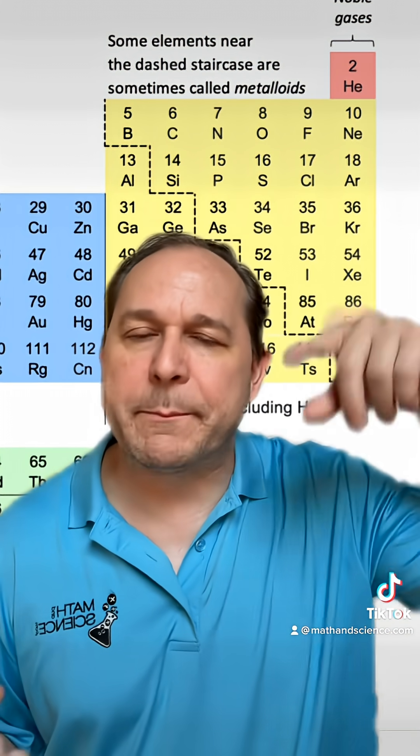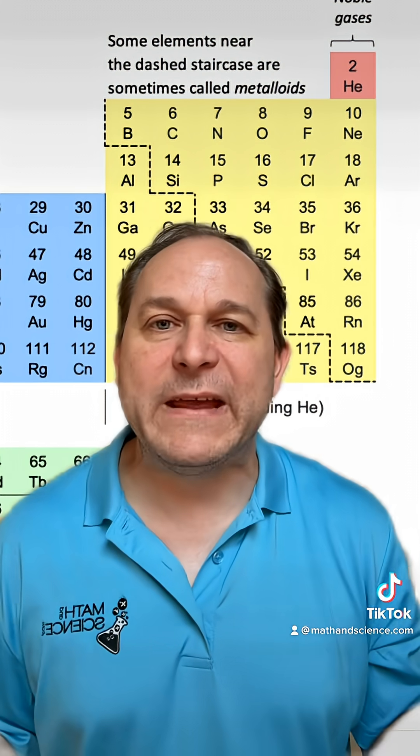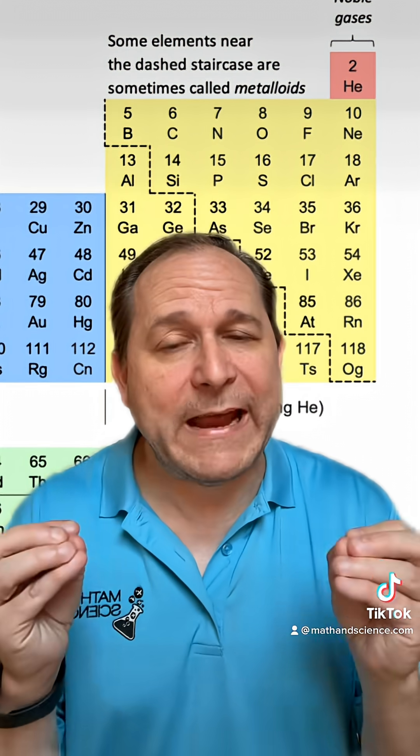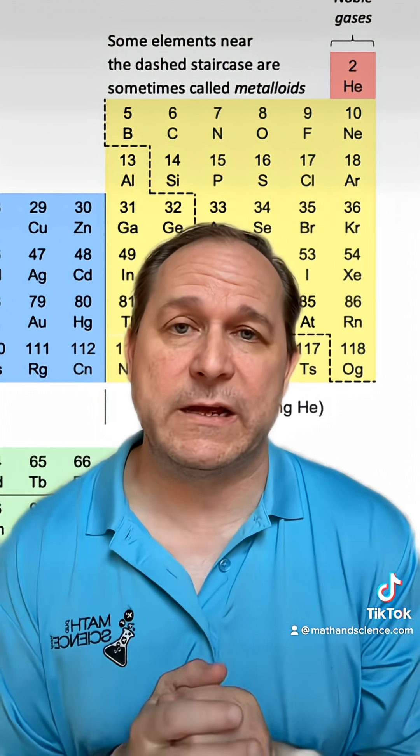Uranium, which you've definitely heard of at the bottom of the table, has a half-life in the billions of years. Very stable, but still decays over time.